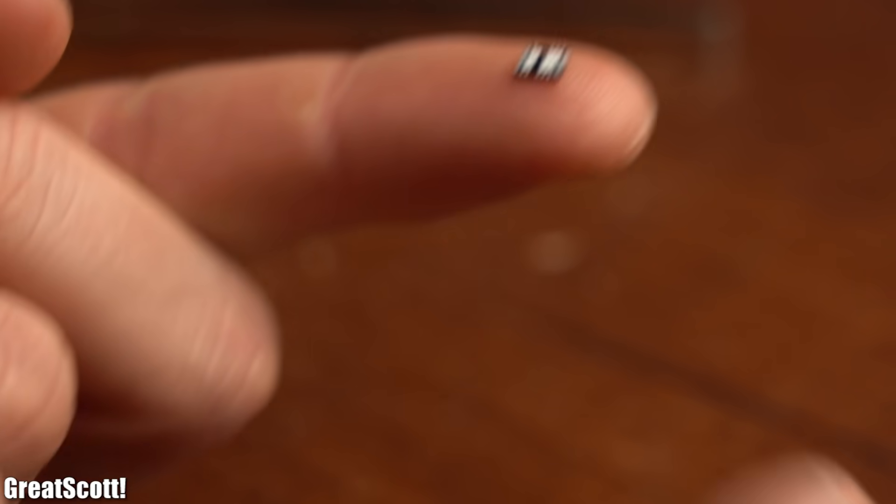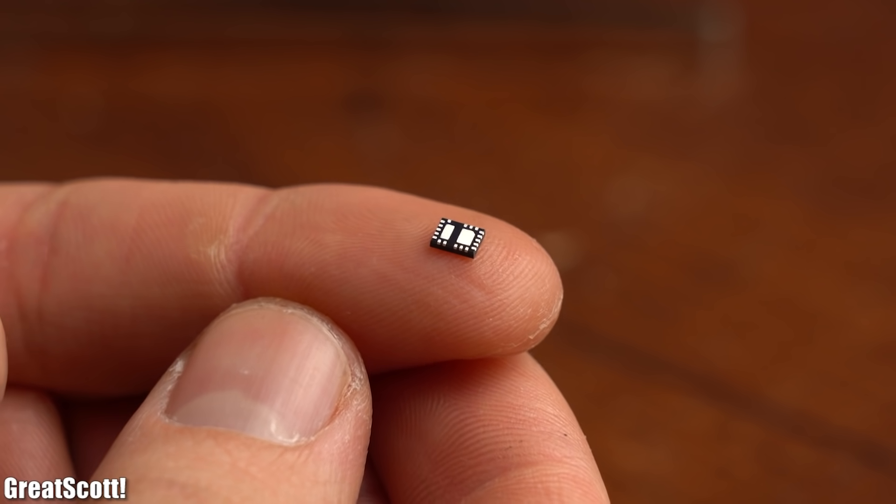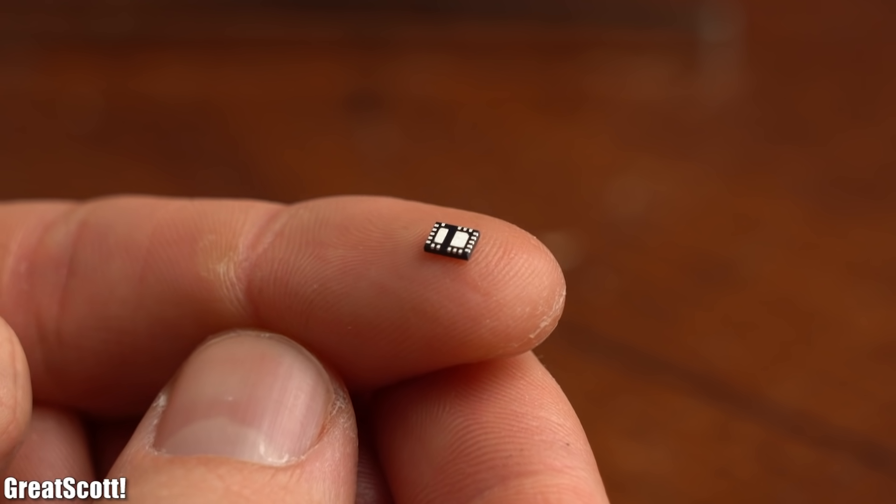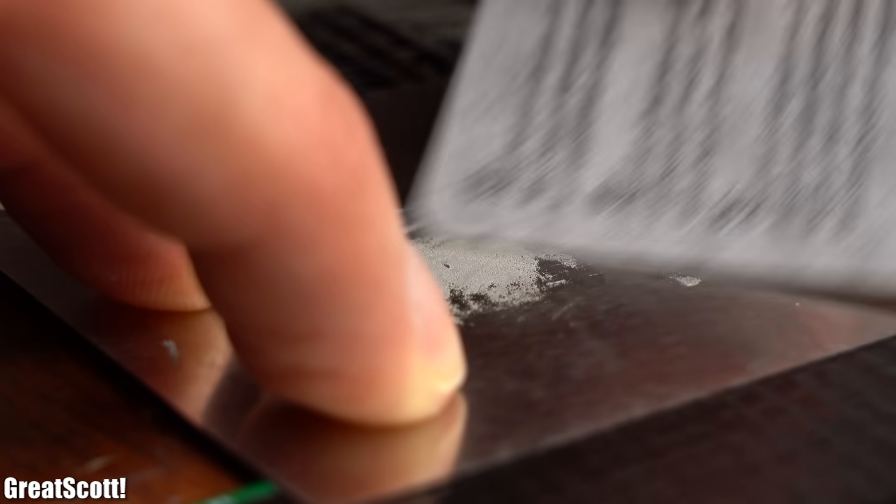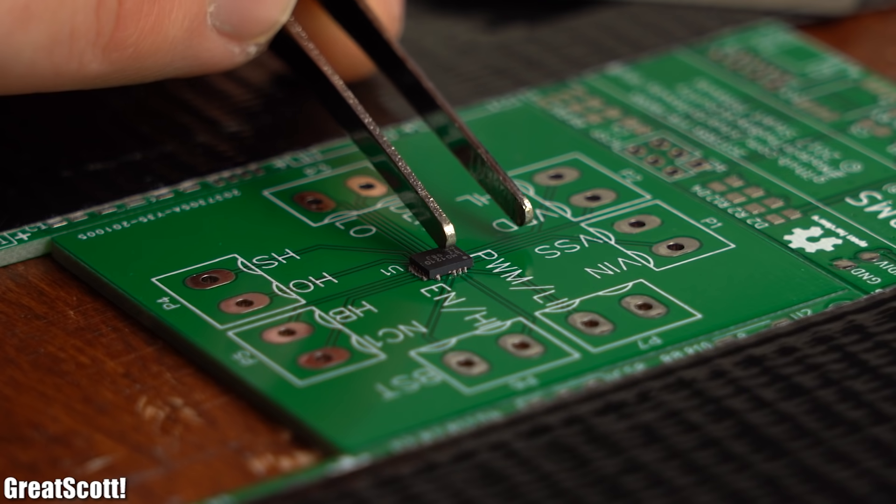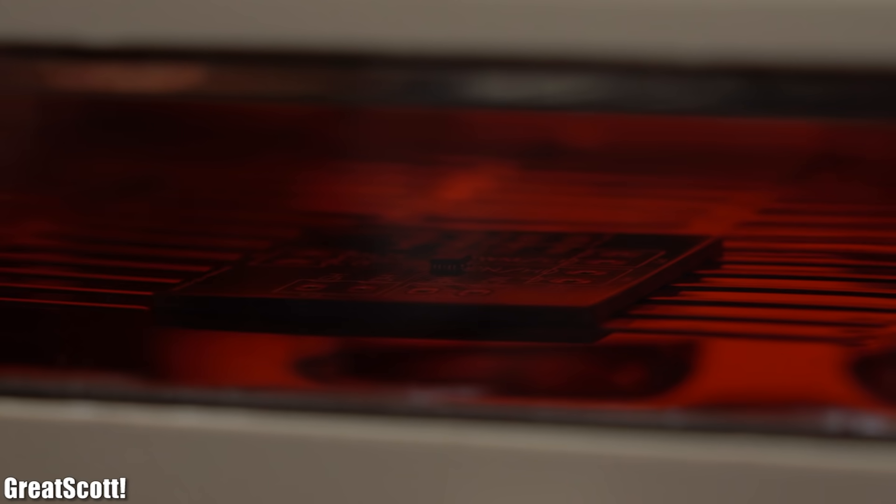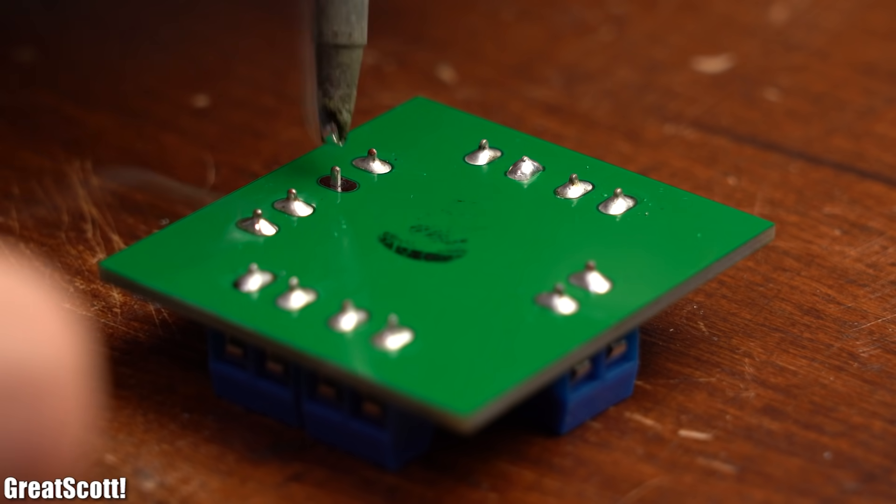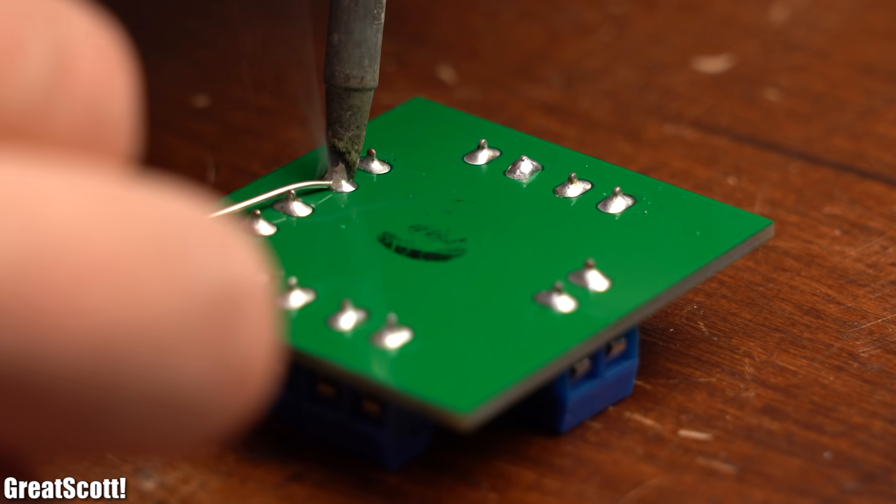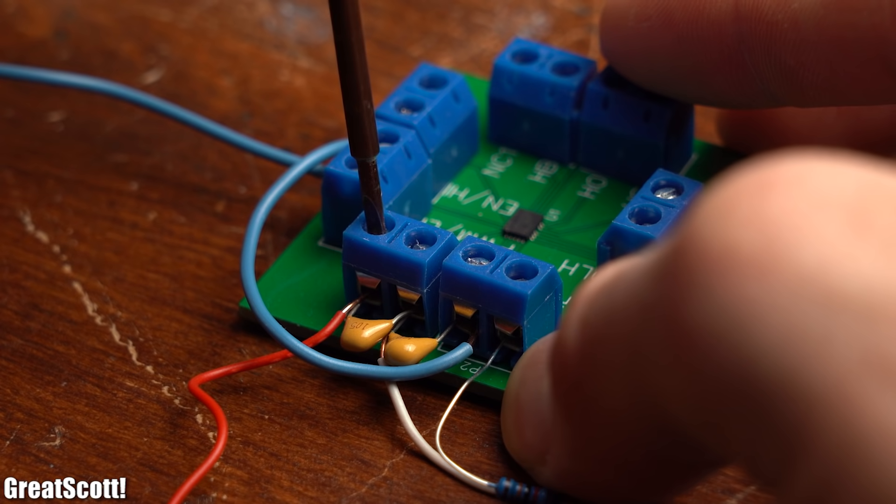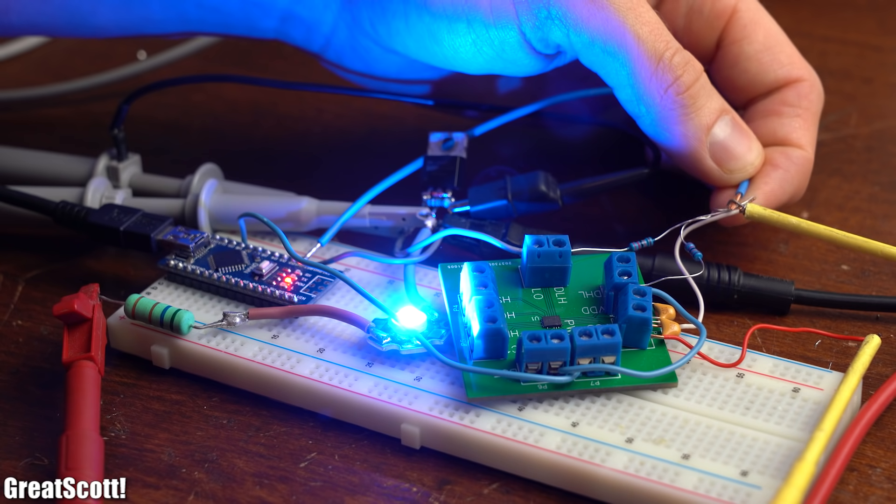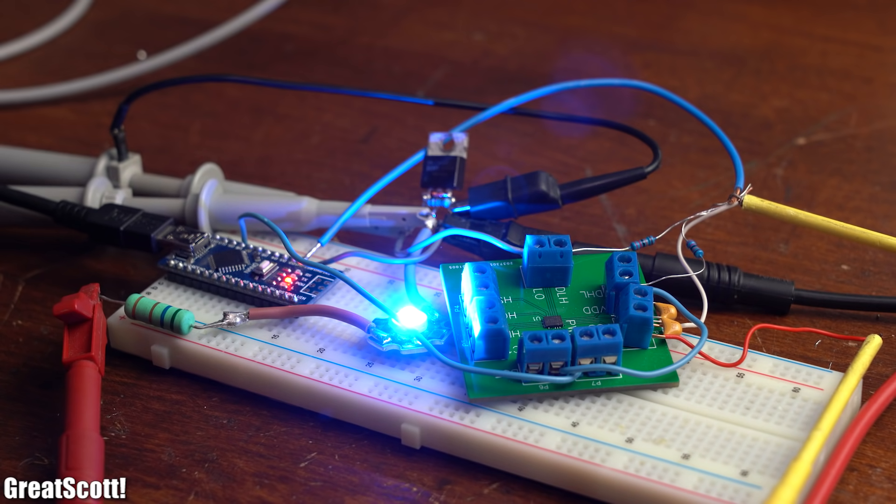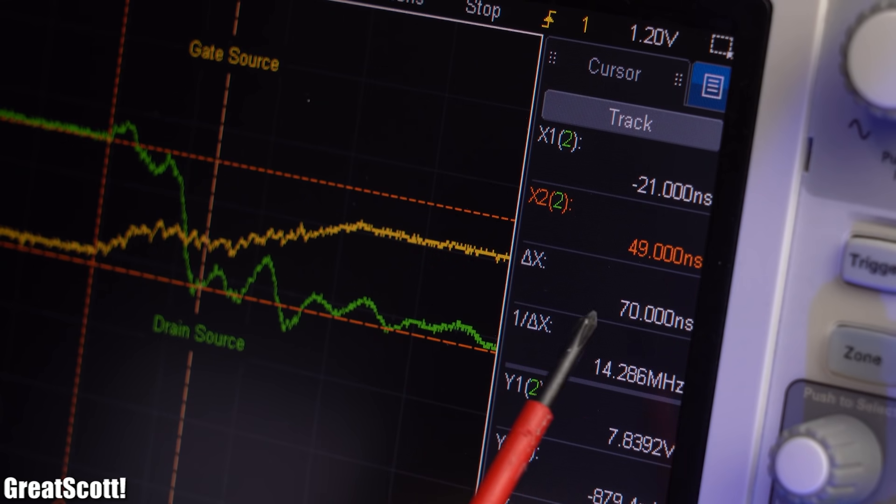The only disadvantage of this IC is that it only comes as an SMD component. That is why I designed such a breakout PCB onto which I soldered the driver IC through the help of solder paste and my reflow oven. After I then added screw terminals to the PCB I also added decoupling capacitors to the supply voltage and connected the driver between the microcontroller and the MOSFET. As you can see the driver shortens the switching times to merely 70 ns.